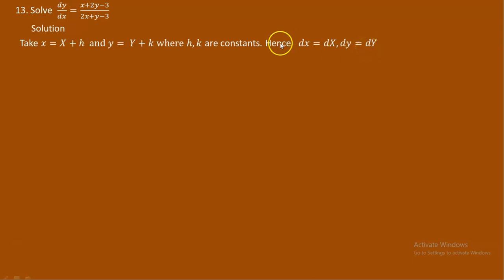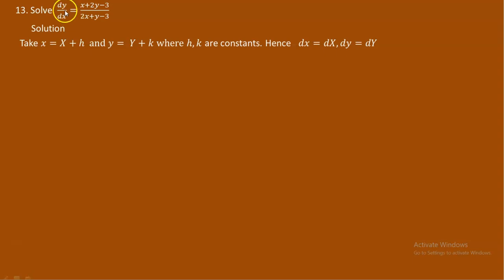My intention here is to change d small x and d small y to d capital X and d capital Y. In place of dy and dx and small y and small x, we will have d capital Y, d capital X, and capital letters X and Y. Using these capital letters, we can automatically change this non-homogeneous DE to homogeneous form.